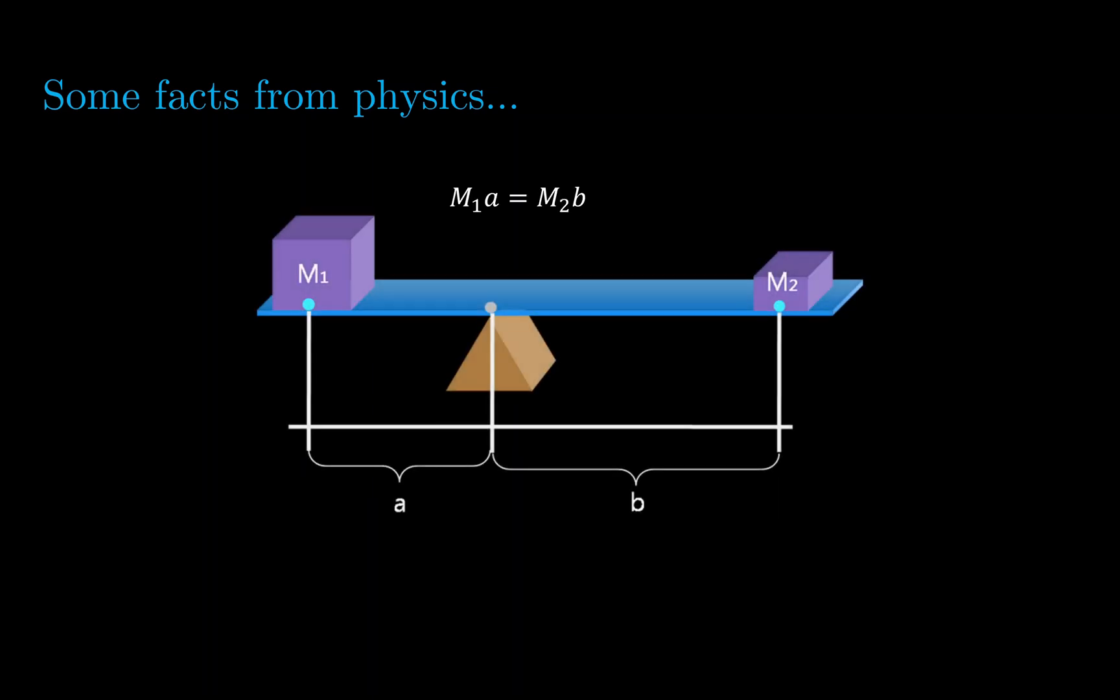This method is known as the method of weights, and to explain the method, we will first need some basic facts from physics. This might be intuitive to many of you, but if you have a seesaw configuration like that shown, in order for the seesaw to be balanced, we will require this equation to hold: M1 times the distance A equals M2 times the distance B. For those of you with physics background, you will recognize that this is basically the principle of moment.